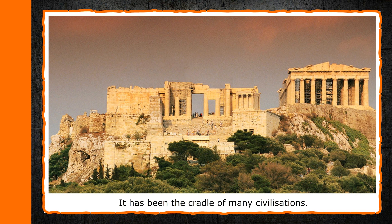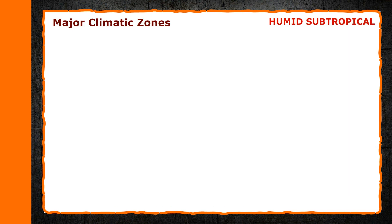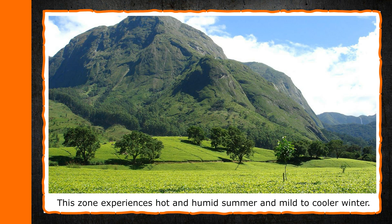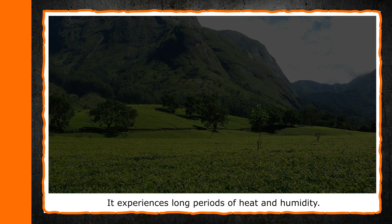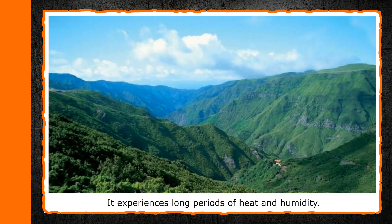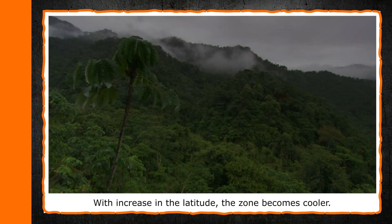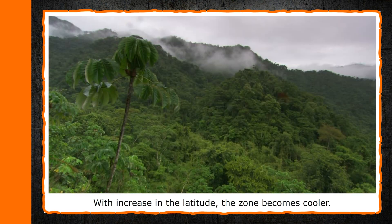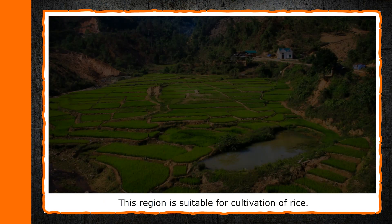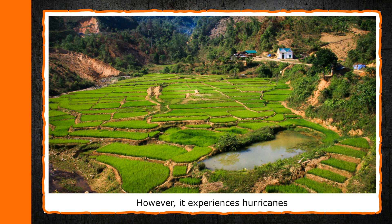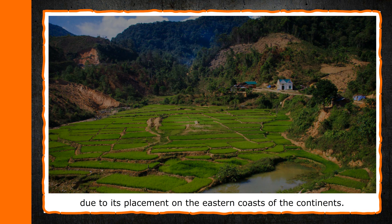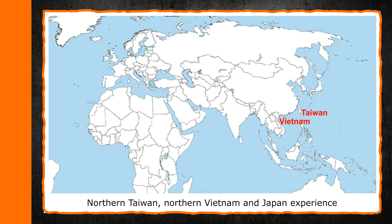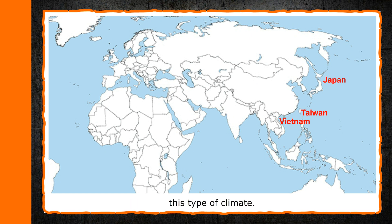It has been the cradle of many civilizations. Humid Sub-tropical. This zone experiences hot and humid summer and mild to cooler winter. It experiences long periods of heat and humidity. With increase in latitude, the zone becomes cooler. This region is suitable for cultivation of rice. However, it experiences hurricanes due to its placement on the eastern coasts of the continents. Northern Taiwan, Northern Vietnam and Japan experience this type of climate.